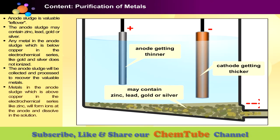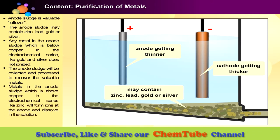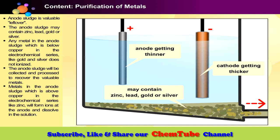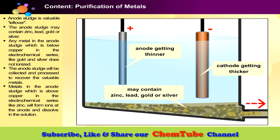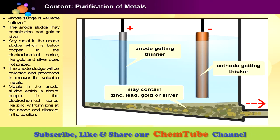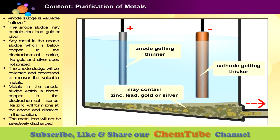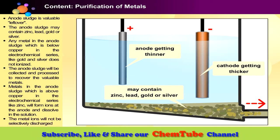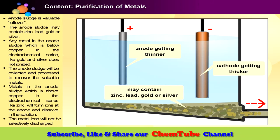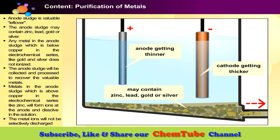Whereas metals above copper in the electrochemical series, like zinc, will form ions at the anode and dissolve in the solution. But the zinc ion will not be selectively discharged at the cathode because its position is higher than copper(II) ion.